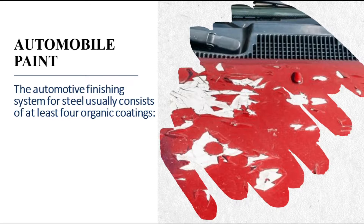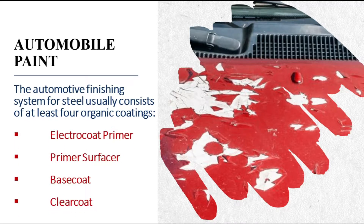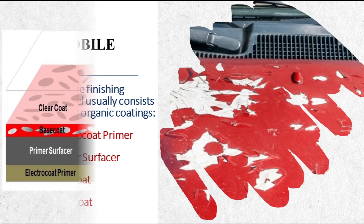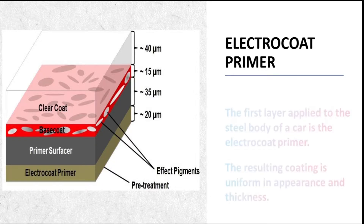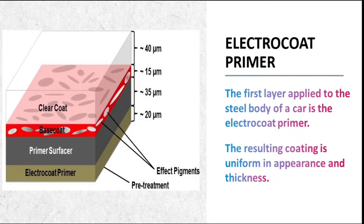The automotive finishing system for a steel body usually consists of at least four organic coatings: electrocoat primer, primer surfacer, base coat and clear coat. The first layer applied to the steel body of a car is the electrocoat primer. The primer system consisting of epoxy-based resins is electroplated on the steel body of the automobile to provide corrosion resistance. The resulting coating is uniform in appearance and thickness. The color of these electro deposition primers ranges from black to grey.